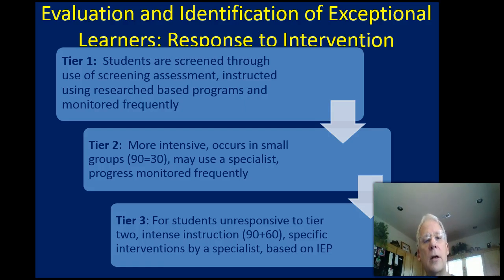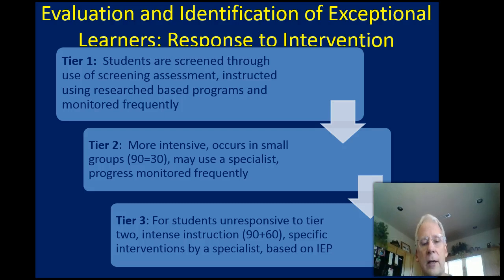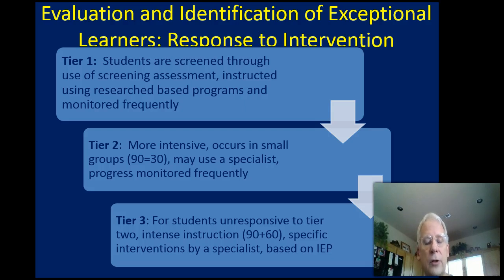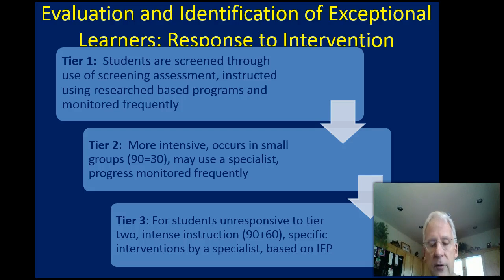If a teacher has done Tier 1 correctly and someone like Justin is still having trouble, we move to Tier 2, where we add additional time, smaller groups, probably a specialist, and more frequent progress monitoring. If we continue to have trouble over a couple of months — every district sets that timeline differently, but teachers have to have time to implement the interventions — we move to Tier 3 with more time and more intensive instruction, perhaps one-on-one. From there, there's the possibility of a comprehensive assessment and possibly special education.